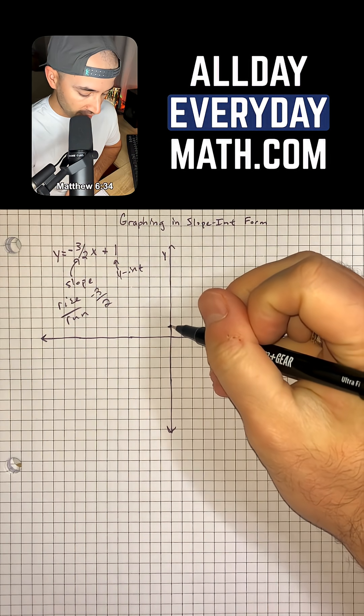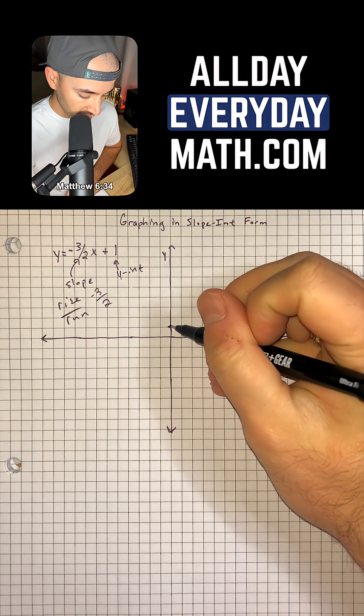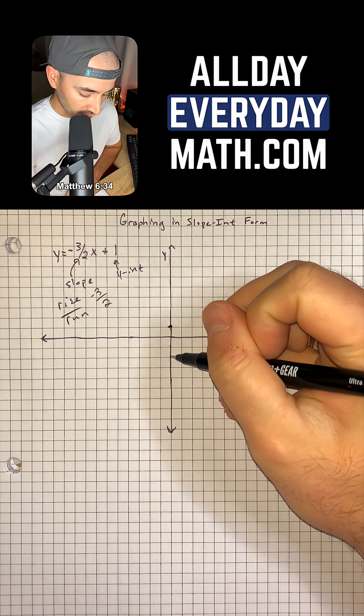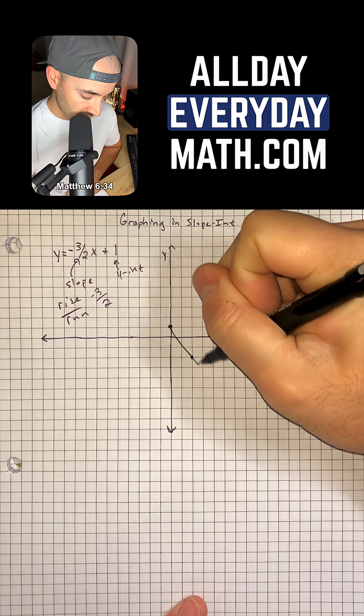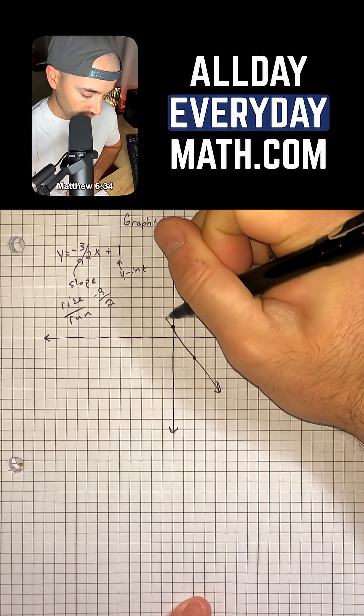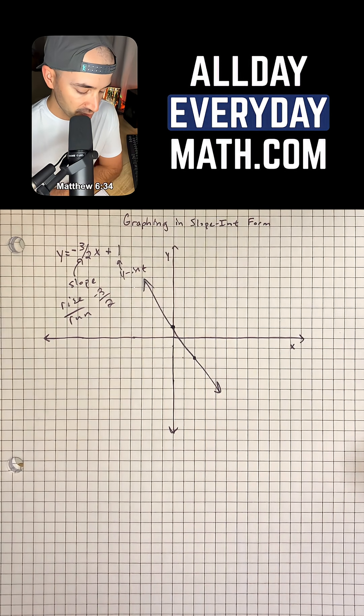From our y-intercept, we're going to go down 3 - 1, 2, 3 - and to the right 2 - 1, 2. That'll be our second point. Now we can just connect our two points and draw our arrows.